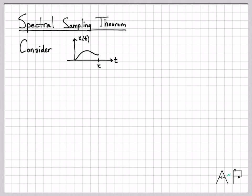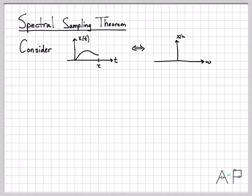Let's talk about the continuous time signal x(t), and we're going to assume that it is time limited. Here is the time limited signal x(t) — it only has non-zero values between 0 and tau. If it's time limited, then it has some Fourier transform that goes from minus infinity to infinity. I've sketched a little cartoon of what that might look like. This is x(omega), the Fourier transform of x(t).